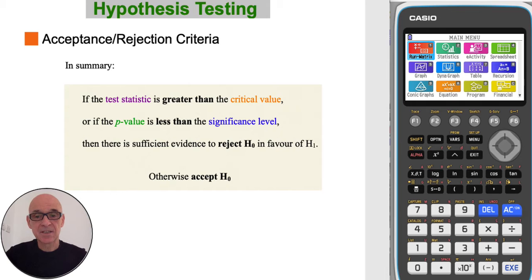If the test statistic is greater than the critical value, or if the p-value is less than the significance level, then there is sufficient evidence to reject the null hypothesis H0. Otherwise, we accept the null hypothesis.